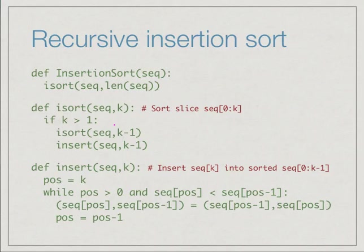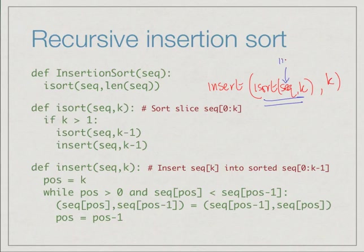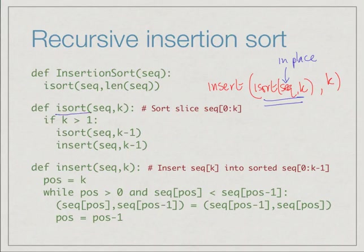Here is a recursive definition of insertion sort in Python. We want to insert the last position into the result of sorting the sequence up to but excluding that position. However, since our insertion sort sorts in place rather than returning a list, we write it as two separate parts: an overall insertion sort function that calls an auxiliary function i_sort, which sorts the sequence up to position k, i.e., the slice from 0 to k-1.